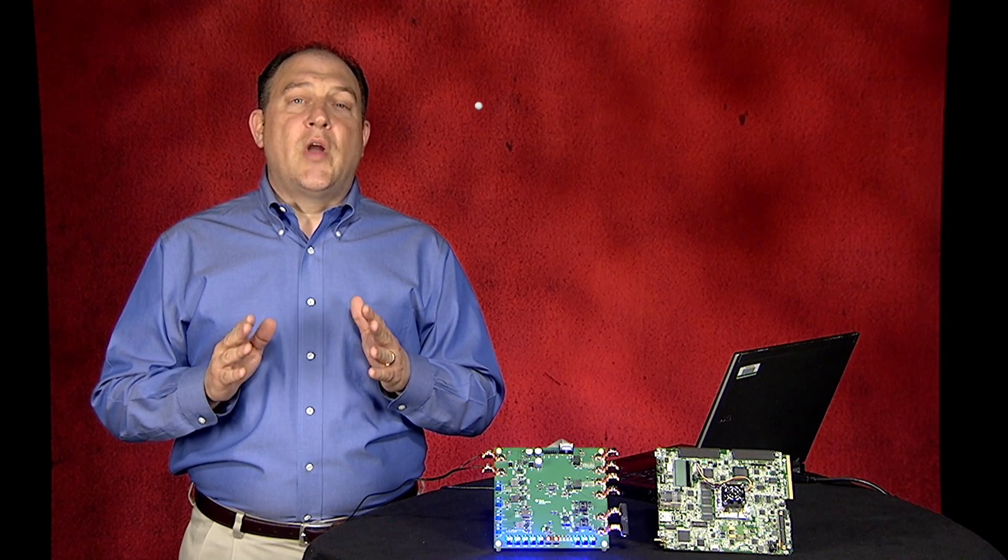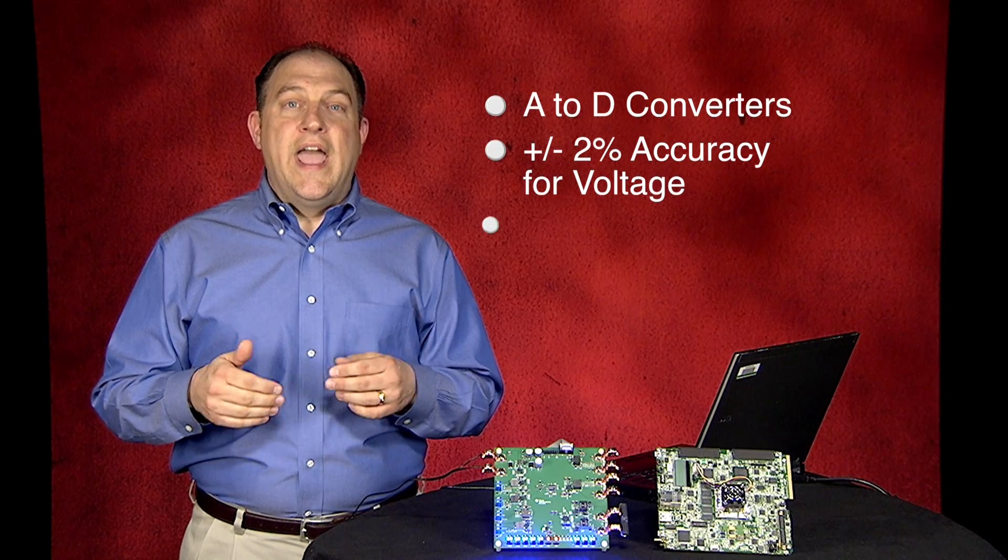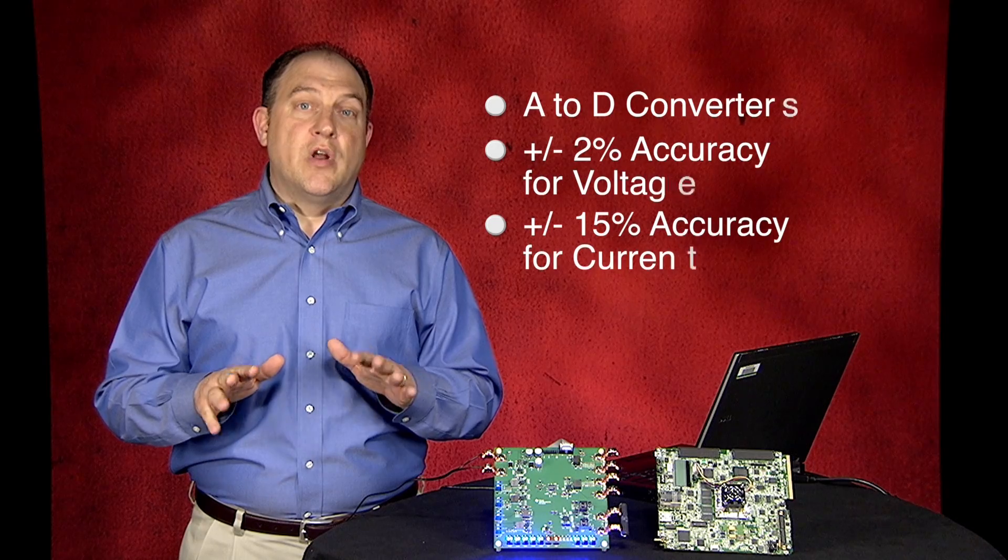The converters integrate precision A-to-D converters for ±2% accuracy for voltage monitoring and ±15% for current monitoring over temperature, including errors. The key advantage is the ability to change the output voltage using PMBUS protocol, which allows two methods for output voltage control.